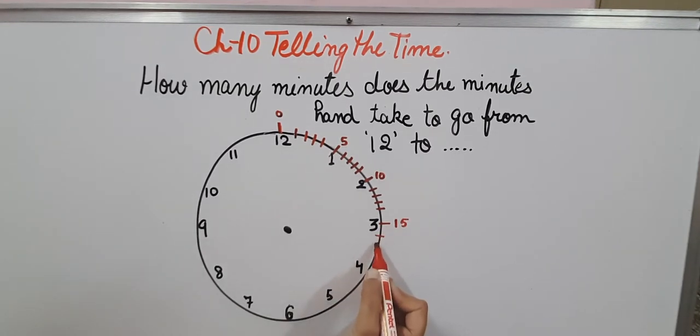Similarly 16, 17, 18, 19 and here on the 4 it will be 20. Then 21, 22, 23, 24 and here on the 5, 25.